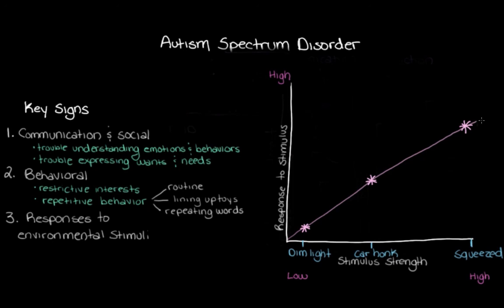For a lot of kids with Autism Spectrum Disorder, they don't necessarily follow this expected line. Some weak stimuli really bother them — their response might be unusually high — while some strong stimuli don't bother them at all, with a very low response. It varies which stimuli evoke which responses. These signs we've looked at aren't the only indicators someone might be on the autism spectrum, but hopefully now you can see that Autism Spectrum Disorder is primarily a social interaction and communication disorder.